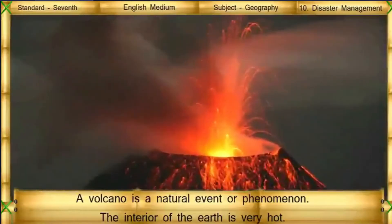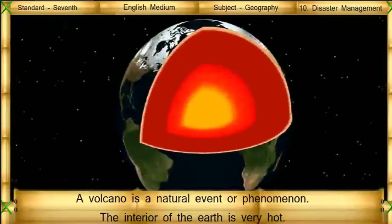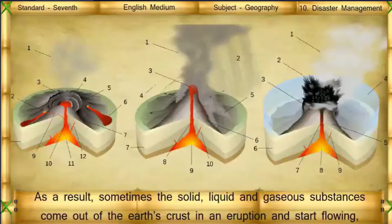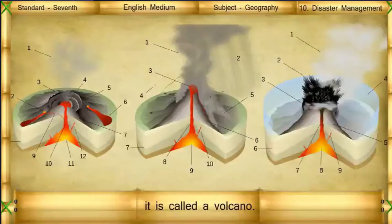Volcano: A volcano is a natural event or phenomenon. The interior of the earth is very hot. Movement of hot substances continuously occurs from the interior towards the surface of the earth. As a result, sometimes solid, liquid, and gaseous substances come out of the earth's crust in an eruption and start flowing. This is called a volcano.